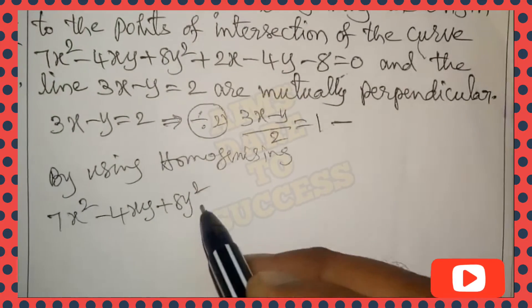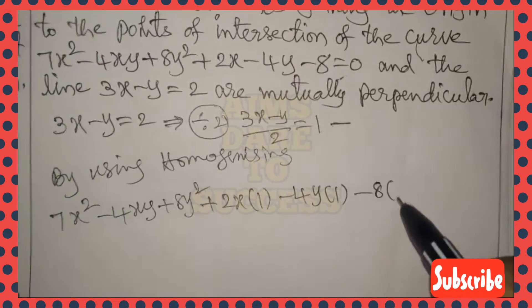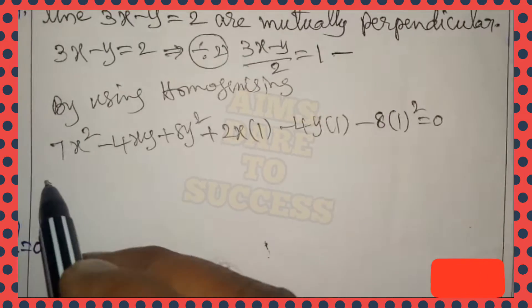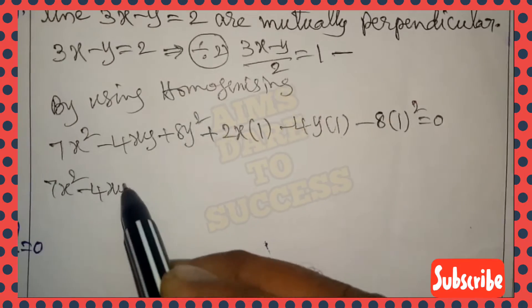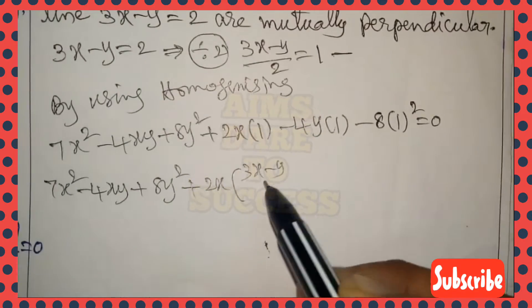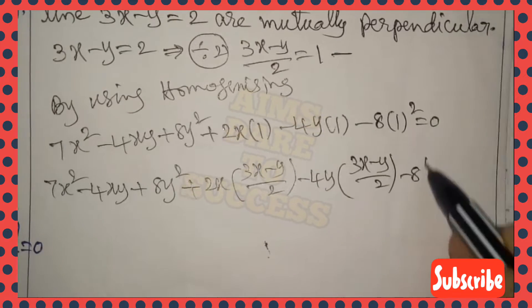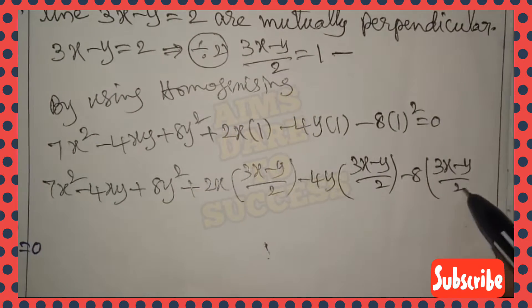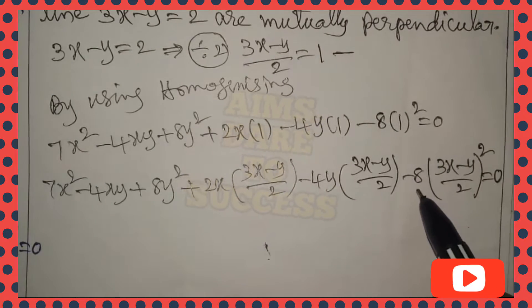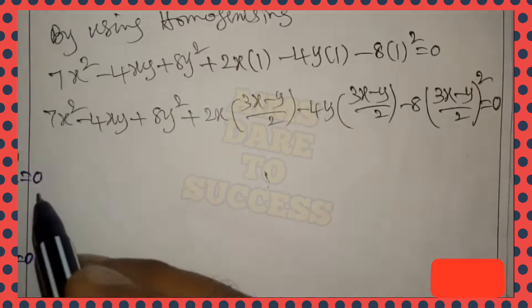...same place: 2x·1 - 4y·1 - 8·1² = 0. In place of 1, substitute (3x-y)/2. We get: 7x²-4xy+8y² + 2x·(3x-y)/2 - 4y·(3x-y)/2 - 8·((3x-y)/2)² = 0.